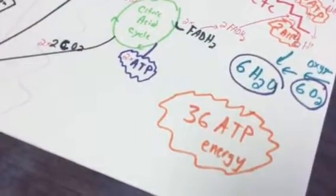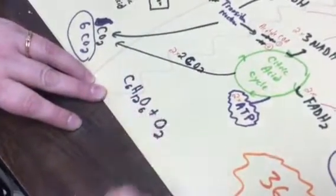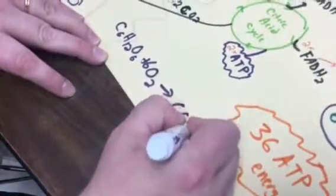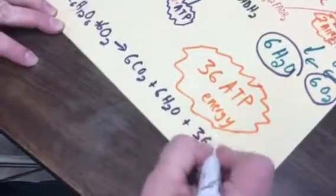So if I recap here, we put glucose in, and we put some oxygen in. We got rid of some carbon dioxide garbage, and we got rid of some water garbage going out. So the chemical reaction overall, we started with our glucose, and we needed some oxygen going in, six of those. And with all these chemical reactions, we ended up with six carbon dioxides at the end, plus six molecules of water, plus about 36 ATP energy at the end. And that is cellular respiration.